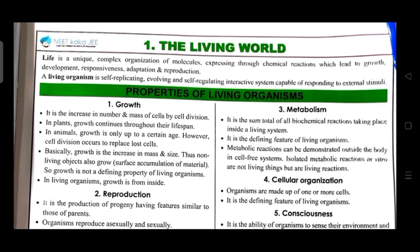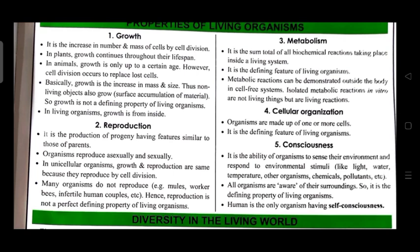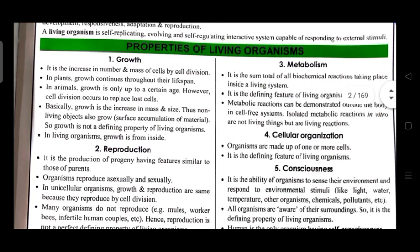Reproduction is the production of progeny having features similar to those of parents. Organisms reproduce asexually and sexually. In unicellular organisms, growth and reproduction are the same because they reproduce by cell division. Many organisms do not reproduce — e.g., mules, worker bees, infertile human couples. Hence, reproduction is not a perfect defining property of living organisms.